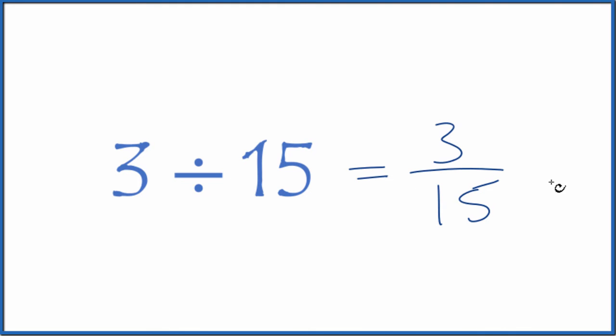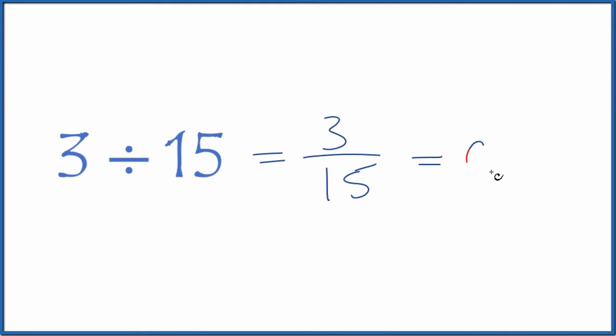And we can divide 3 by 15 on our calculator. When we do that, we end up with 0.2. So when we divide 3 by 15, we get the fraction 3 fifteenths and the decimal 0.2, and these are the same value.